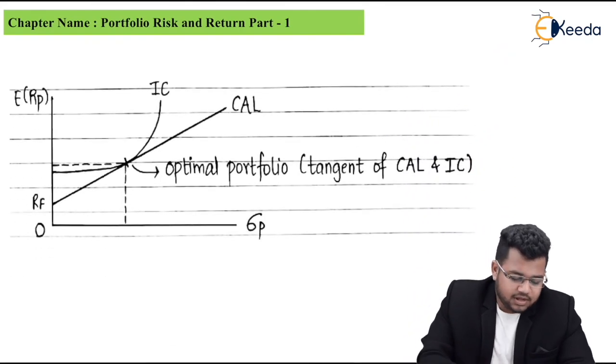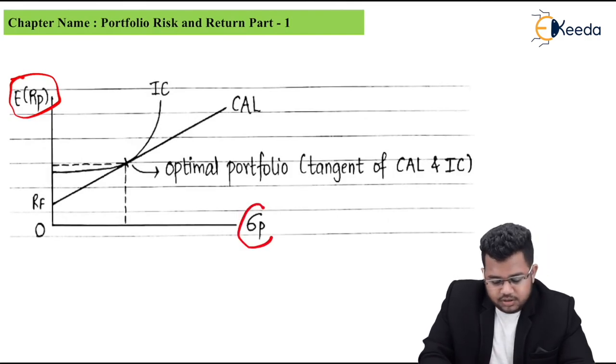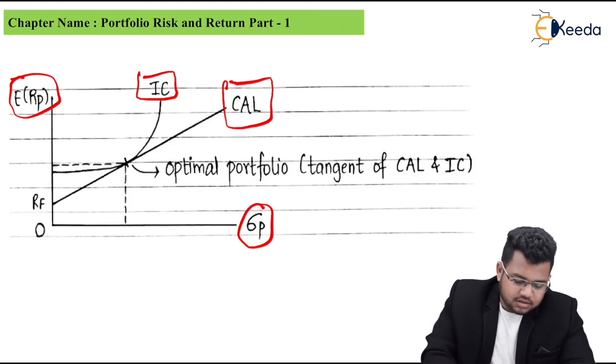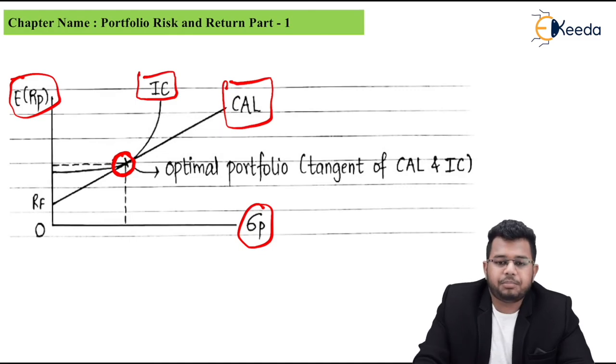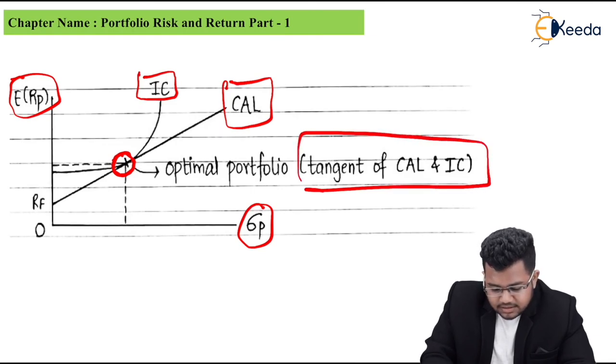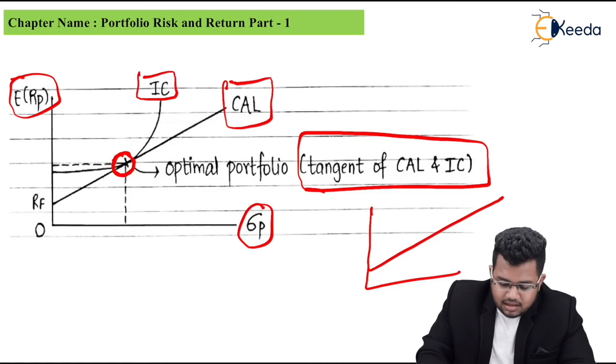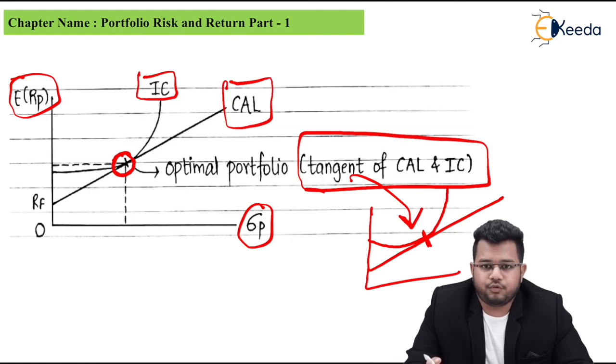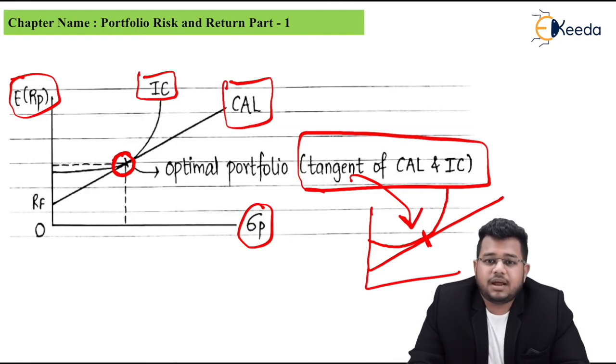You can see in the diagram, vertical axis has expected return of portfolio, horizontal axis has sigma, standard deviation or risk of portfolio. This is the CAL, and this is the indifference curve. Where the indifference curve and CAL meet, that is your optimal portfolio. And for MCQs, what language do we use? Tangent. Do you understand tangent? If this is my CAL and this is my indifference curve, where both touch, that's called tangent. Where tangent occurs, at that point, whichever portfolio gives you that much risk and that much return, that will be your optimal portfolio. Thank you for watching this video, stay tuned to Keeda and subscribe to Keeda.